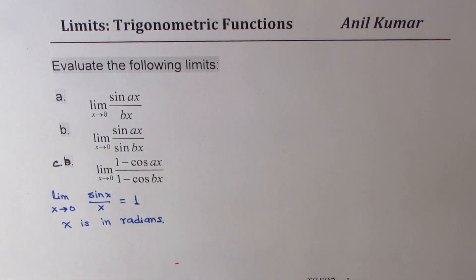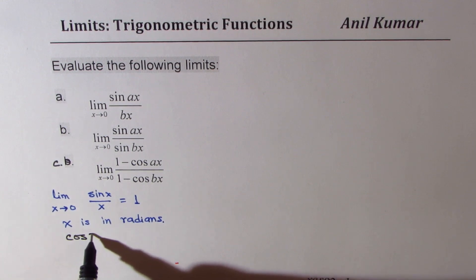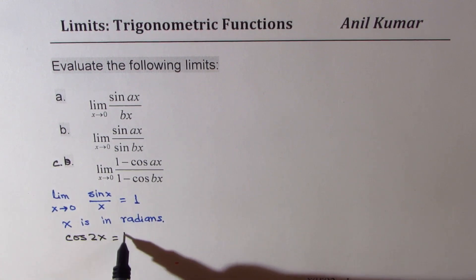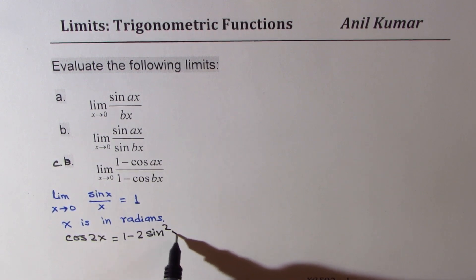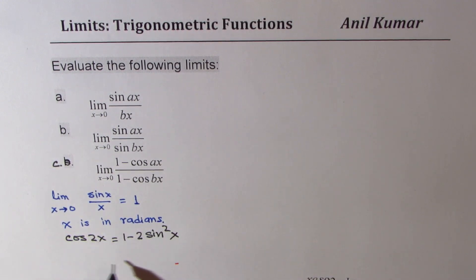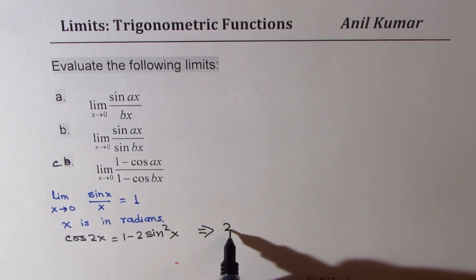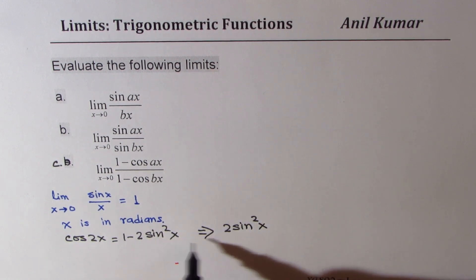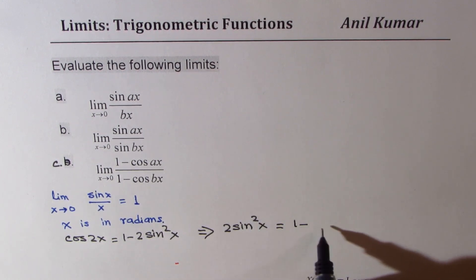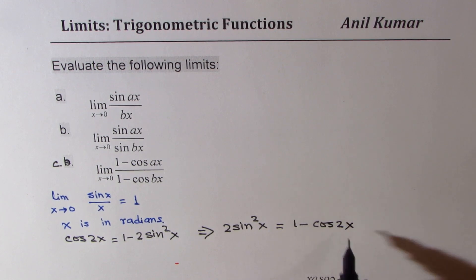I hope you remember that cos 2x can be written as 1 minus 2 sine square x. If you rearrange this formula, then you can always write 2 sine square x equals 1 minus cos 2x.